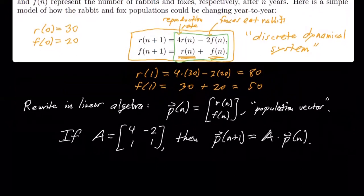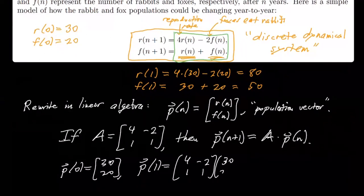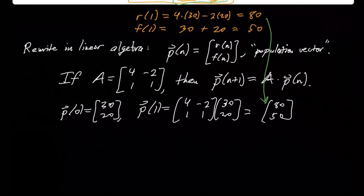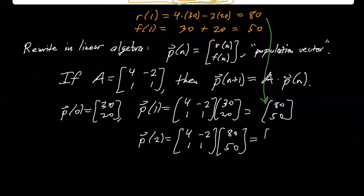Okay. So e.g., for example, we know P(0) is [30, 20]. And then this says P(1) is [4, -2; 1, 1] this matrix times [30, 20], which is if you compute it out, it's the exact same computation that was up here, right? And so we get [80, 50]. And you can keep going. If you want to know the population after two years, we can multiply again, right? That's A times P(1), which I think is 320 minus 100, I think it's 220 and 80 plus 50, 130. So there's 220 rabbits, 130 foxes, so the population is going to grow after two years.